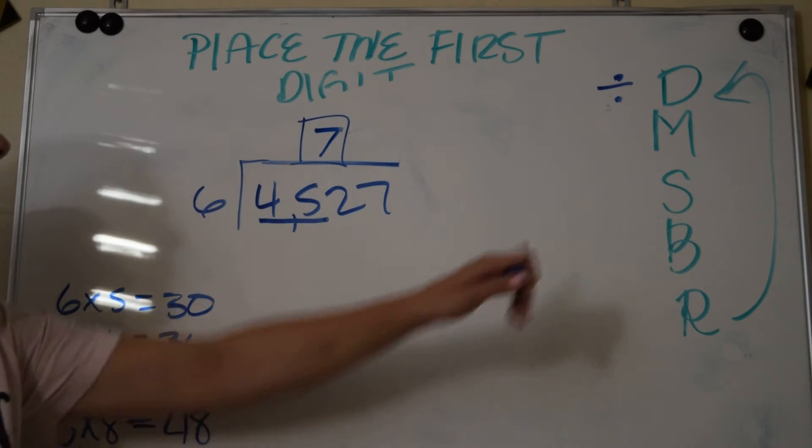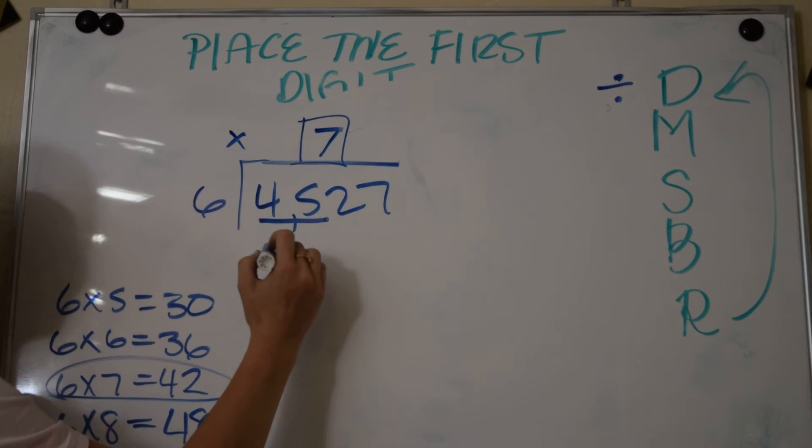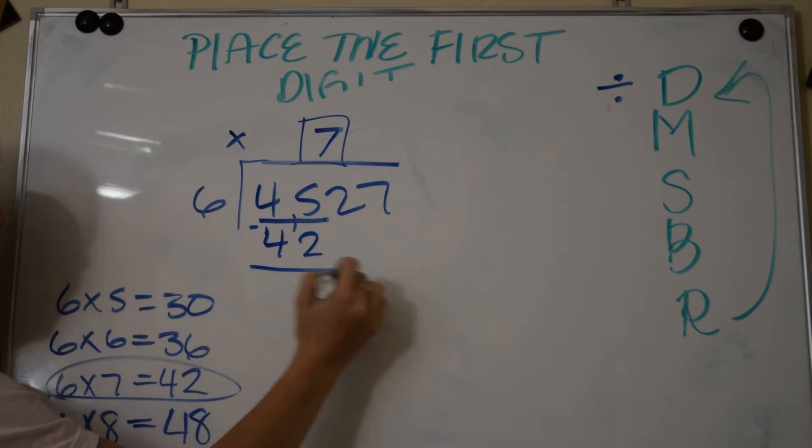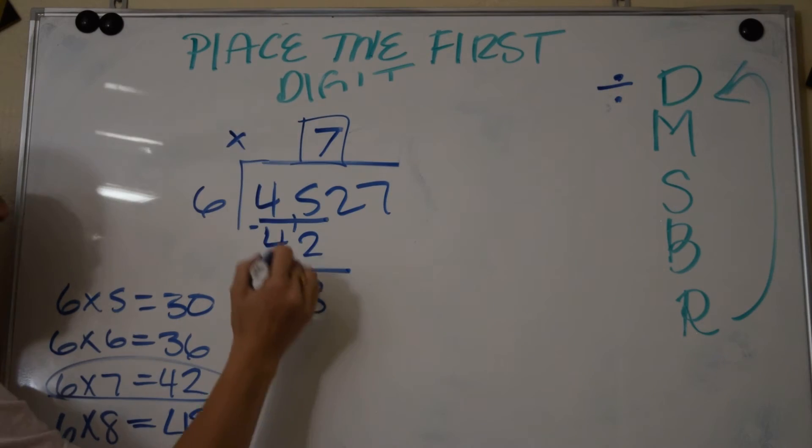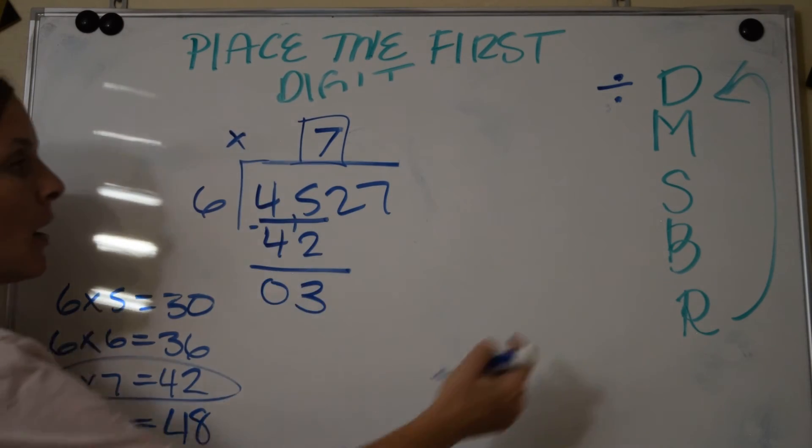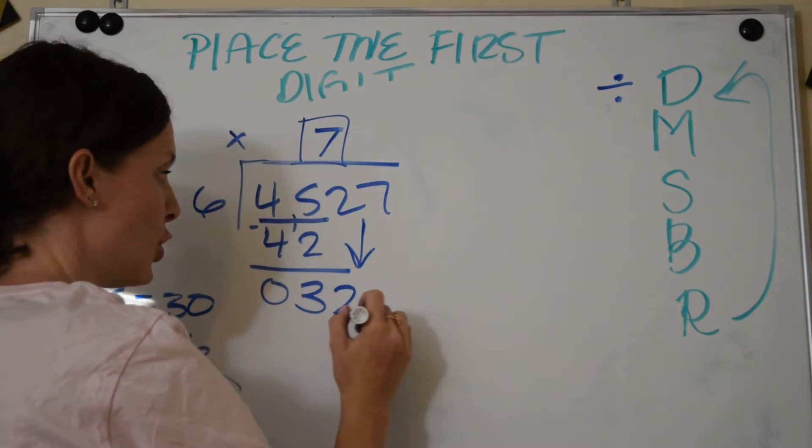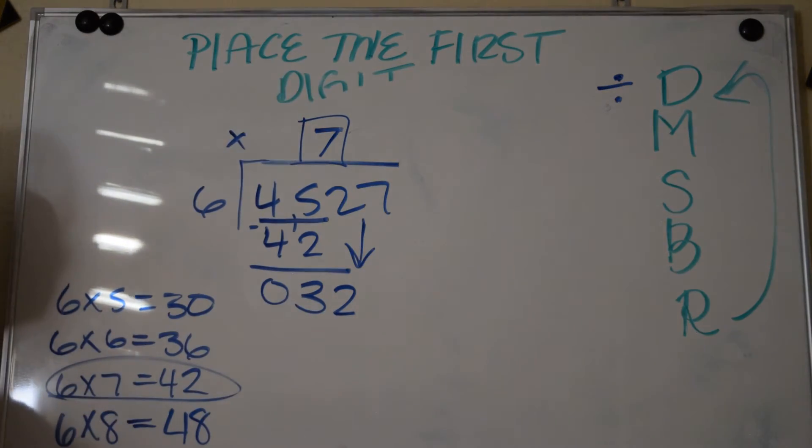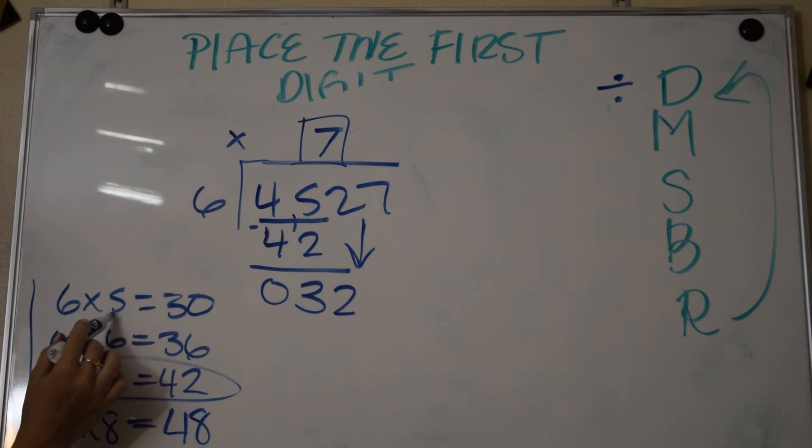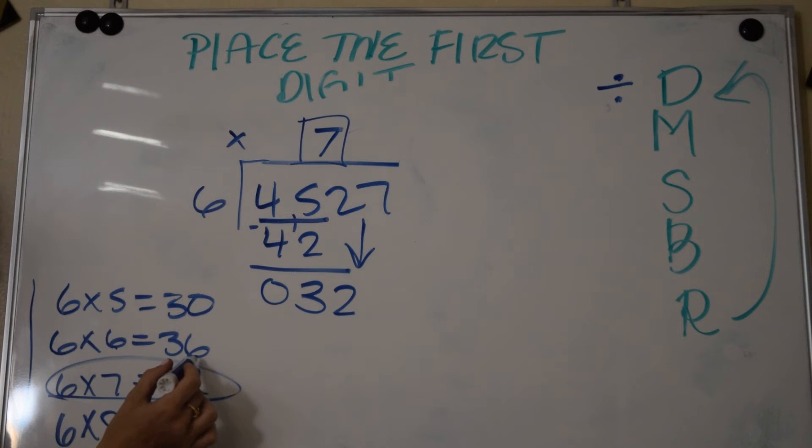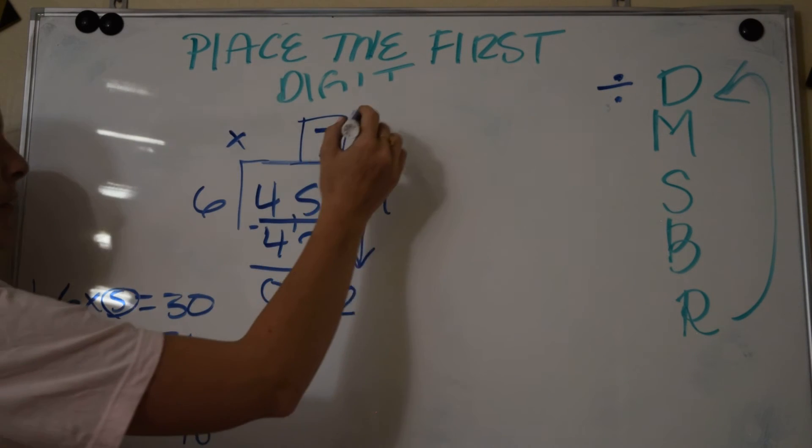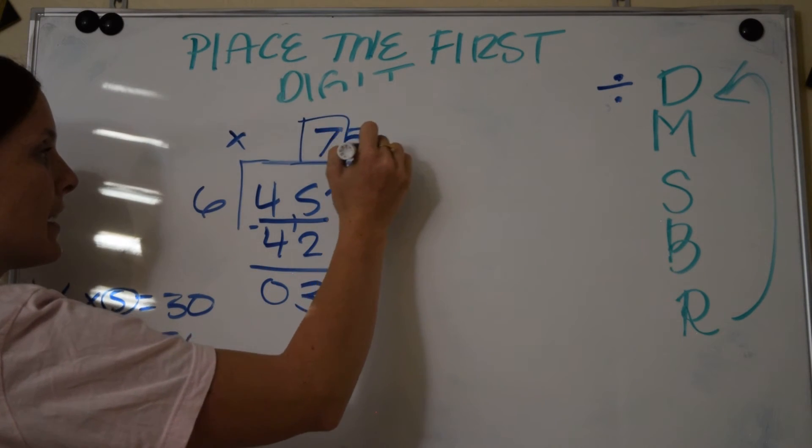Now I multiply: 7 times 6 is 42. 5 minus 2 is 3, 4 minus 4 is 0. Bring down just one digit at a time, it's a 2. 6 into 32. Well look, I still already have my math facts up here. 6 times 5 is 30, but 6 times 6 is 36. 36 is too high, so the most it can go in is 5 times.